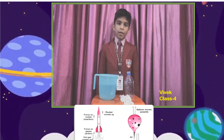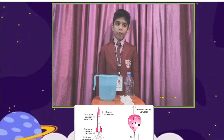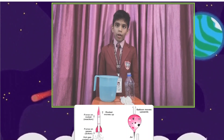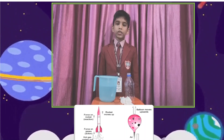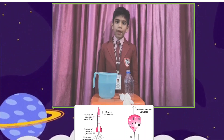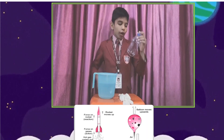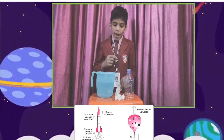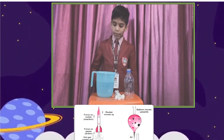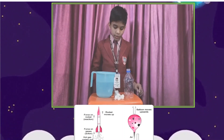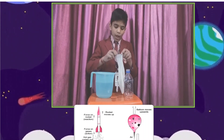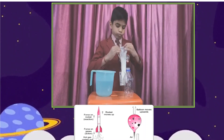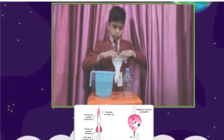Hello everyone. My name is Vivek of Class 4 from Global School Gurugram. Today, I am going to show you an experiment which shows that air occupies space. For this, we need a bottle cut in half from the bottom, a rubber glove, and a container half-filled with water. First, we will wrap this rubber glove over the top of the bottle.